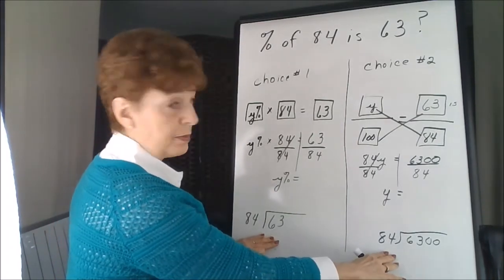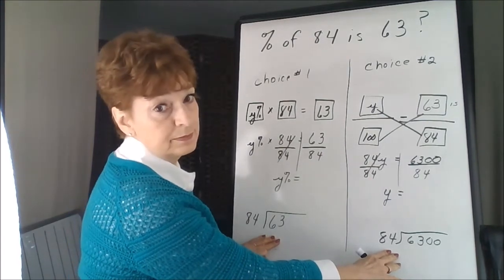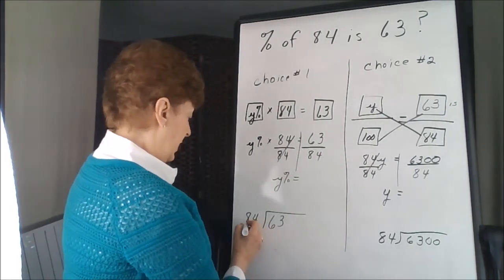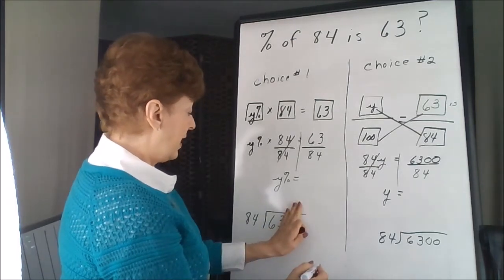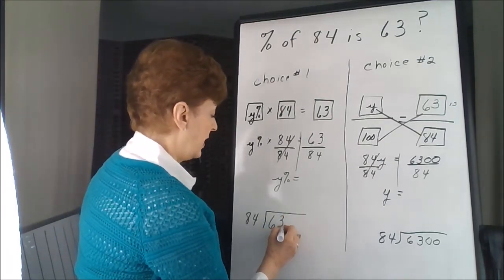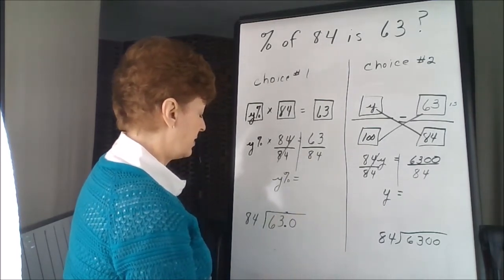This is how our position looks at this point. All right, 84 divides into 63, it does not. This is too small, so we're going to have to add a decimal point and a zero. The decimal point goes straight up into the answer.